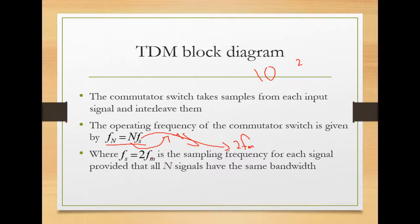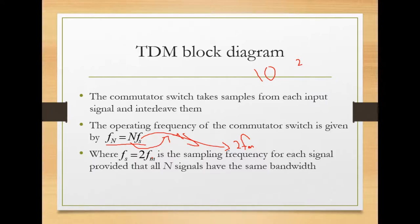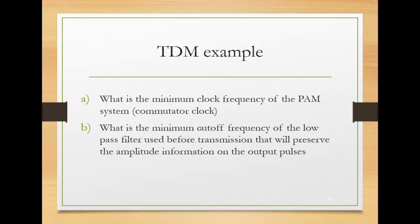Let's take an example to understand this more deeply. Two signals are to be transmitted using pulse amplitude modulation TDM. The first signal has a bandwidth of 0 to 8 kilohertz; the second has a bandwidth of 0 to 10 kilohertz. The two signals are sampled at the same sampling frequency in spite of having different bandwidths. The sampled signals are passed through a low-pass filter before transmission. The question asks: what is the minimum clock frequency of the PAM commutator?